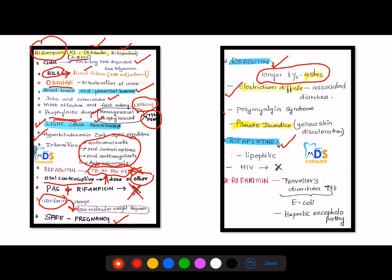This rifabutin has a longer half-life, that is 45 hours, and can be used in Clostridium difficile-associated diarrhea. And it can cause polymyalgia syndrome and pseudojaundice which is important, which causes yellow discoloration of the skin. Then coming to rifapentine, it is lipophilic and it cannot be used in HIV. And there is another drug called rifaximin. This rifaximin can be used in traveler's diarrhea treatment which is caused by E. coli, and also in hepatic encephalopathy along with anti-tuberculosis.